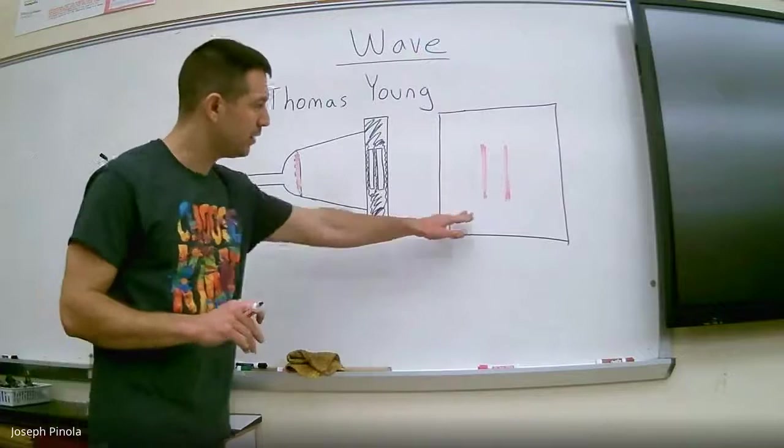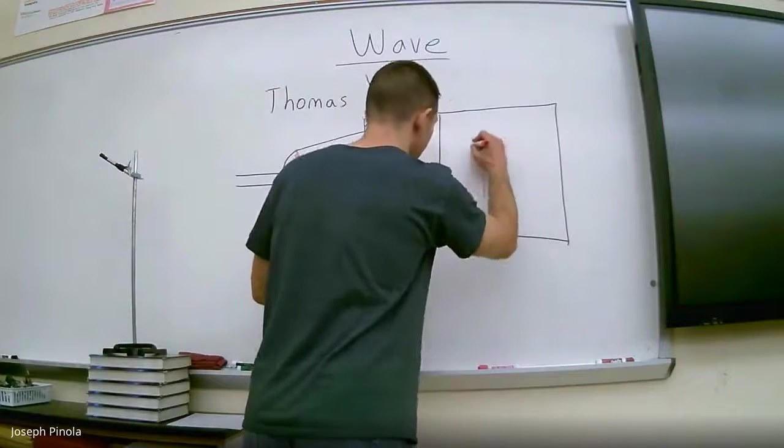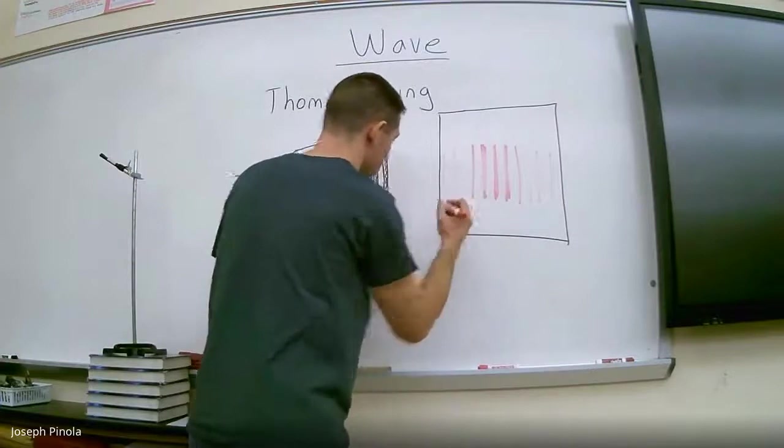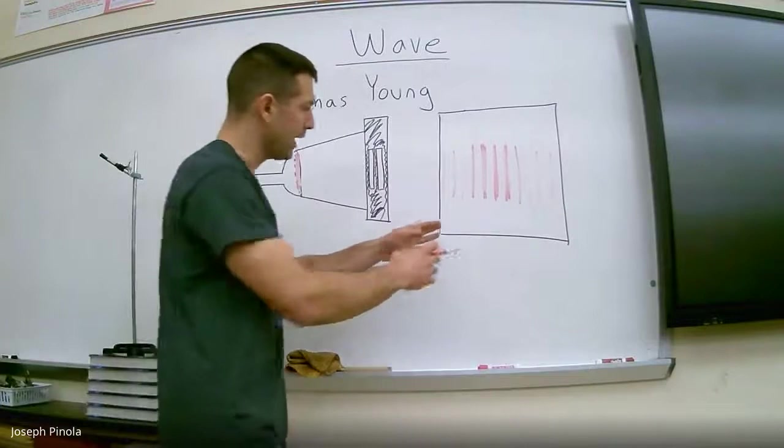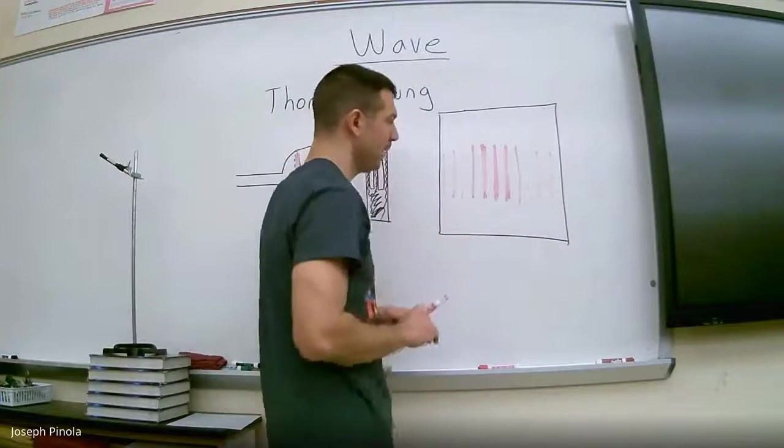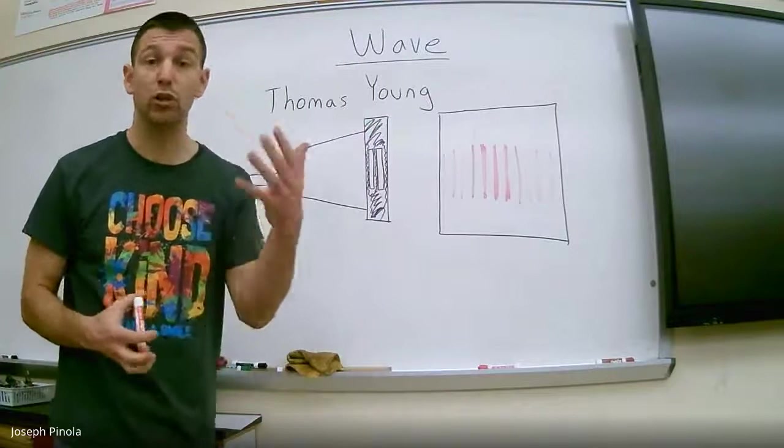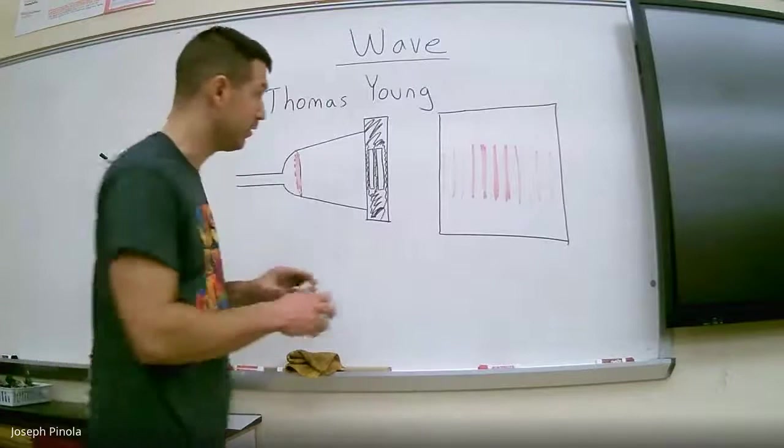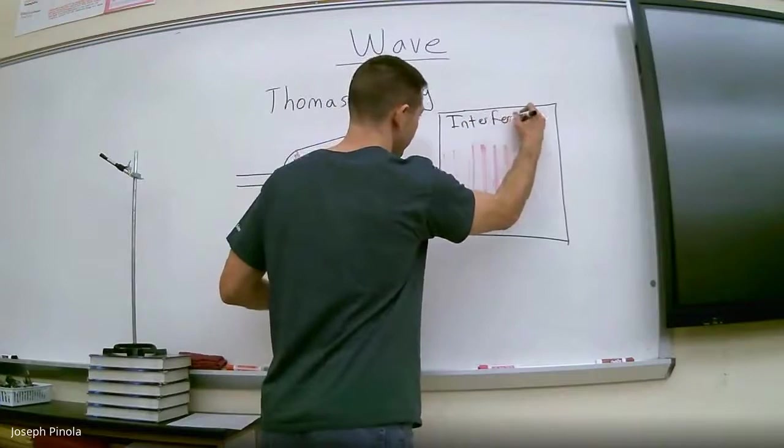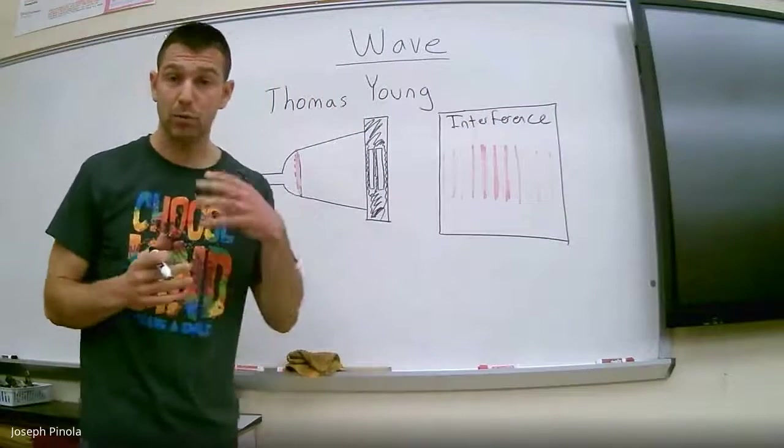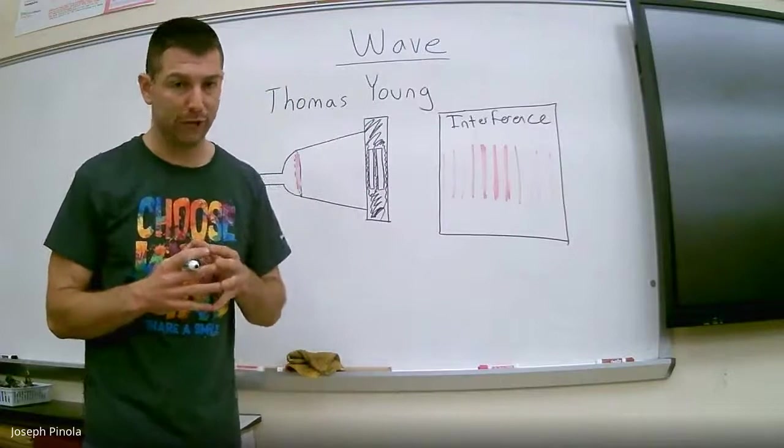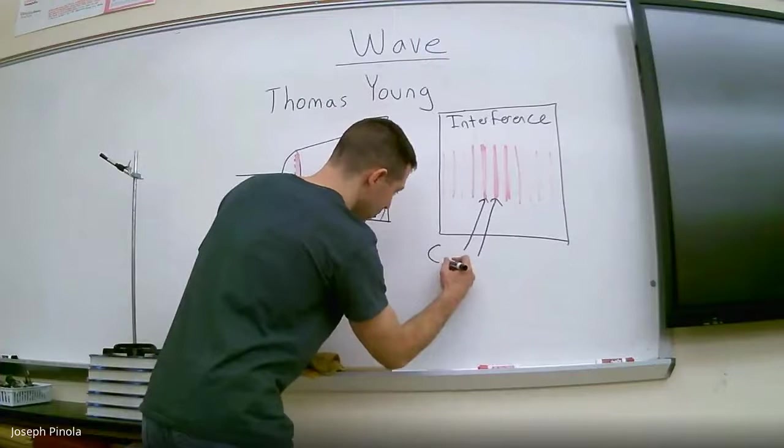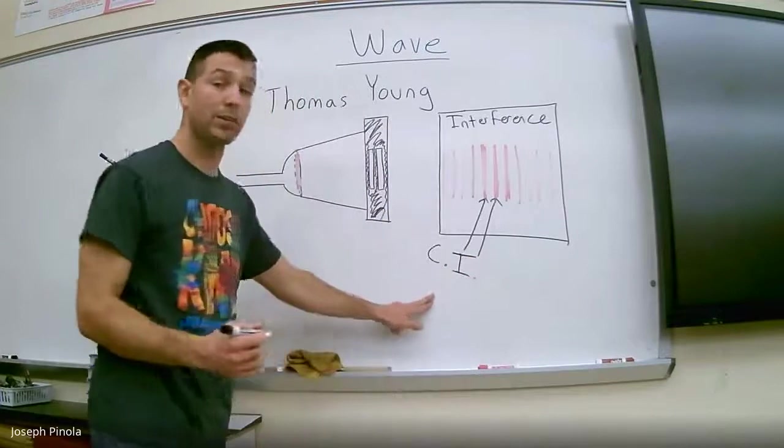In fact, he found a bunch of long strips of red on the other side. Now those strips of red got less and less intense the further they went from the middle. But he still was really surprised to see that there were so many strips of red as opposed to just two. And so Thomas Young said that what must have happened was interference, which we've learned about in the past. That's when a wave can overlap with another wave or with itself.